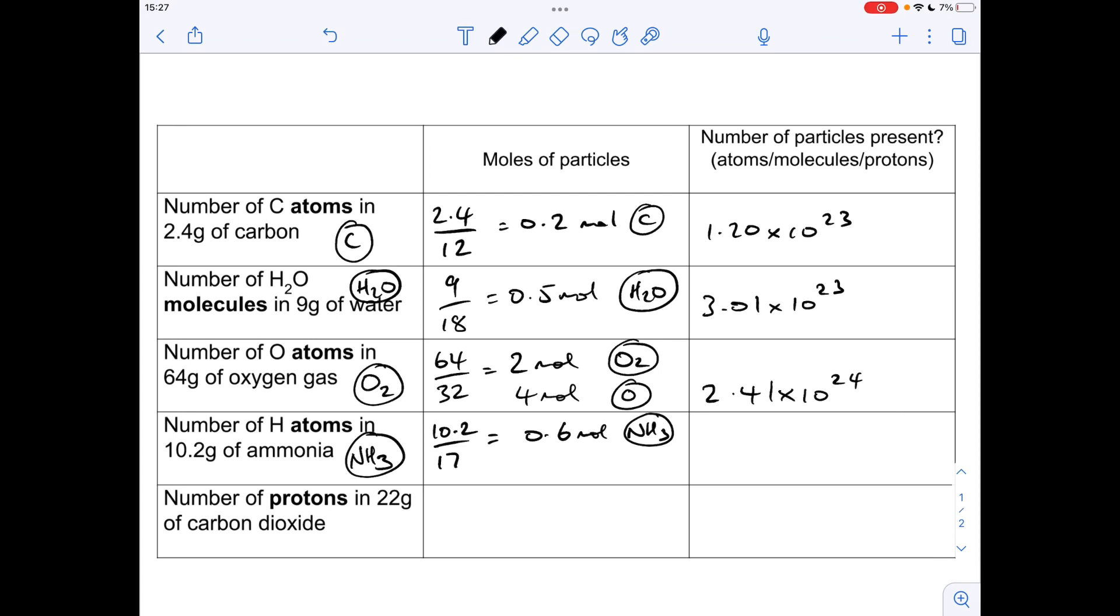But we haven't been asked to find out how many molecules we've got. We've been asked to find out how many hydrogen atoms we've got. So there's three hydrogen atoms in each molecule. So we need to multiply 0.6 by 3. So that's going to give us 1.8 moles of hydrogen atoms, which I'll just represent like that. And that's what we multiply by Avogadro's number. So it's 1.08 times 10 to the 24.